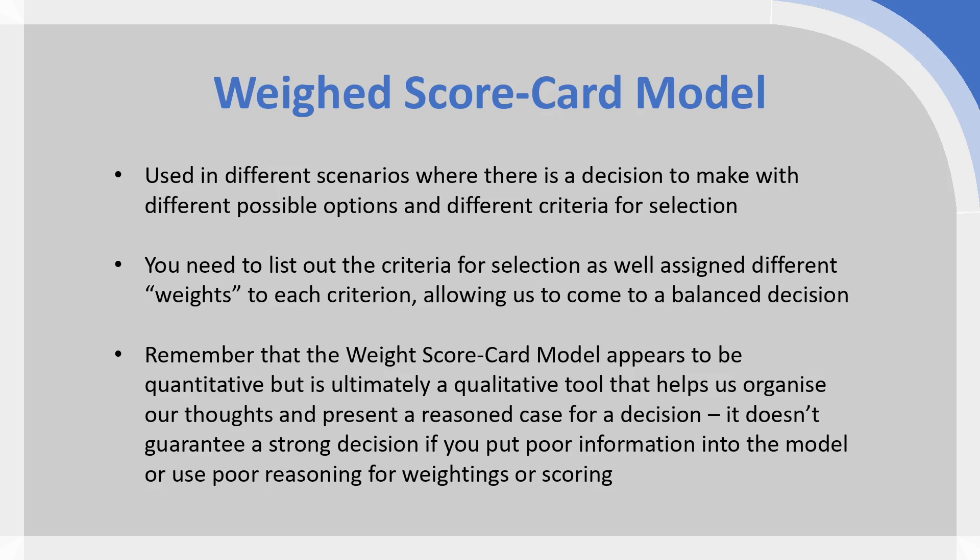There's a range of things we need to do in order to apply the model. We'll actually create our own Wade scorecard, but the key thing we have to do — as well as having our different options — is have a clear criteria for selection. You need a clear list of requirements and a clear understanding of which of those requirements are more important versus others.